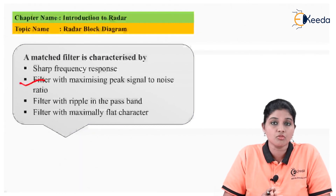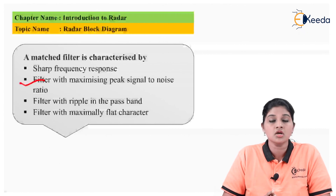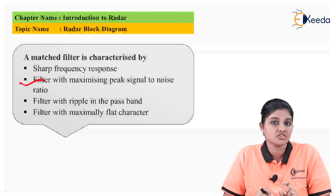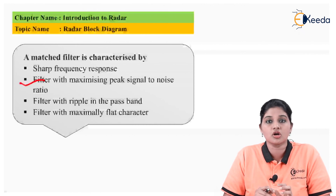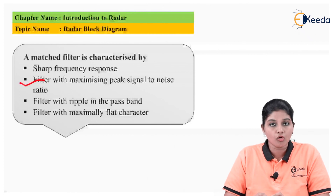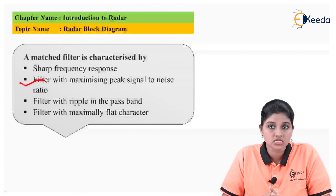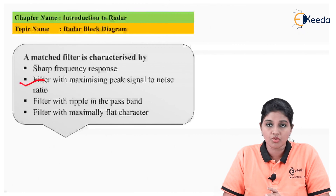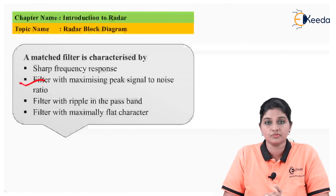The basic radar block diagram consists of only two blocks — transmitter, receiver, and antenna — but the generalized block diagram gives detailed information about each block of the radar system. I hope you understand this topic of the block diagram of the radar system. Thank you very much for watching this video. Stay tuned to Ikira, subscribe to Ikira. Thank you.